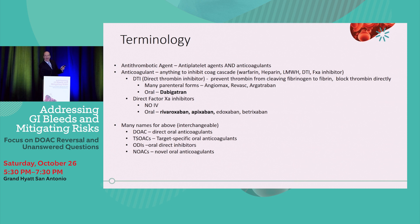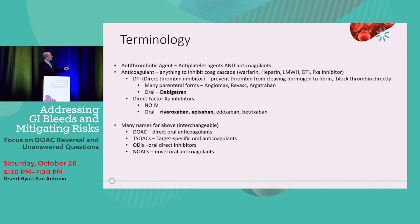The most common DTI, or direct thrombin inhibitor, is dabigatran, which is Pradaxa. Not a ton of use from a hematology standpoint, but a ton in the cardiology space — using Pradaxa for atrial fibrillation, because it was the first of the novel anticoagulants to come out on the market. There are also some parenteral forms for the direct thrombin inhibitors: Angiomax, Argatroban, and Bivalirudin you might be familiar with.